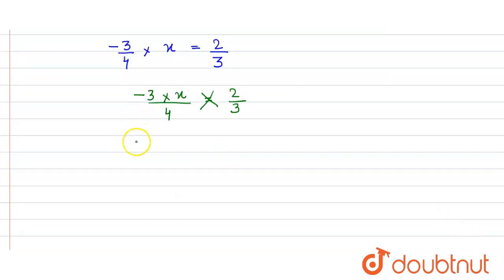So here we get minus 3 into x into 3, and that will be equals to 4 into 2. So the value of x equals 4 into 2 divided by minus 3 into 3.